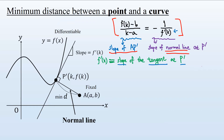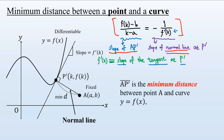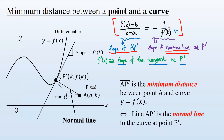So we have this underlying mathematical principle: the length AP' being the minimum distance between point A and the curve y equals f(x) is equivalent to line AP' being the normal line to the curve at point P'. It can be either minimum or maximum depending on the curve, but here it suffices to say minimum.